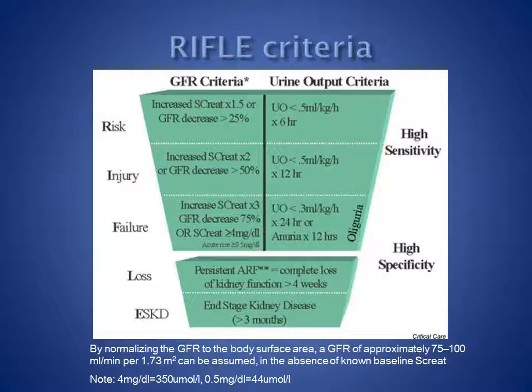RIFLE class L, or loss of kidney function, occurs when complete loss of kidney function has been present for more than 4 weeks. And RIFLE class E, end stage kidney disease, represents loss of kidney function for more than 3 months.